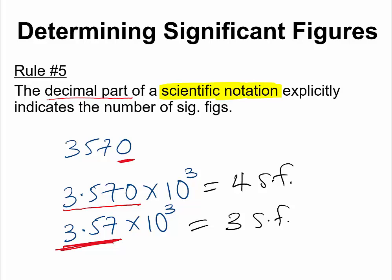So my advice to you is that if you want to write a measurement in an unambiguous way, write it in scientific notation.